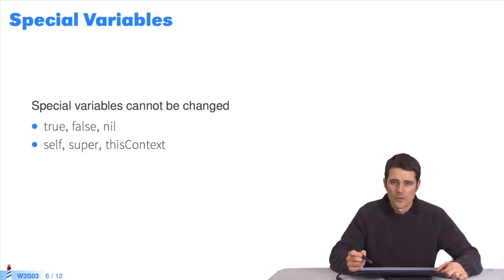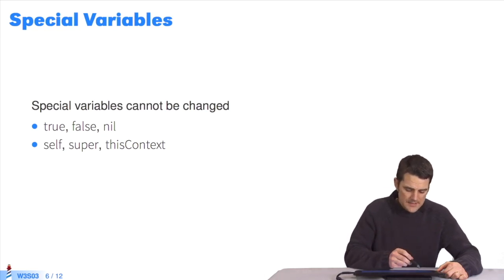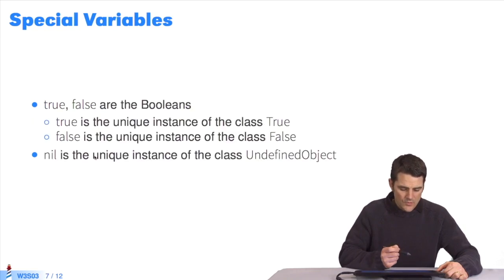In Faro, there are six specific variables, called special variables. You can't change their names. They are reserved words in Faro. There are more than 50 of them in Java or JavaScript. In Faro, only six. These are true, false, nil, self, super, and thisContext. Let's figure out what these reserved words are for.